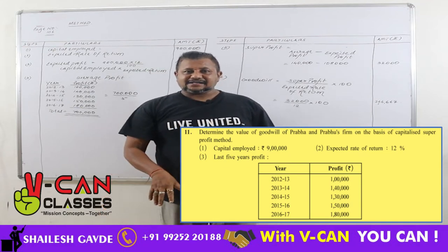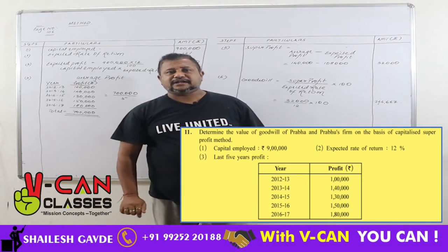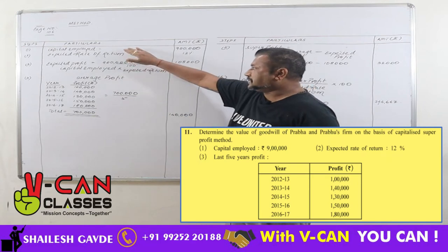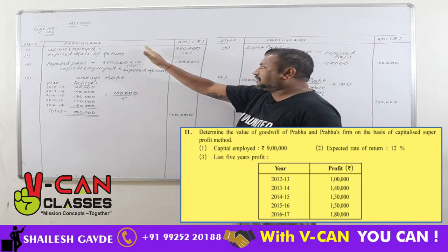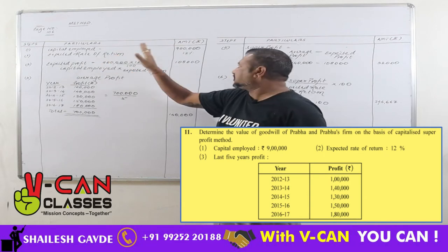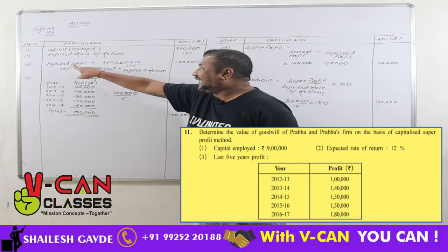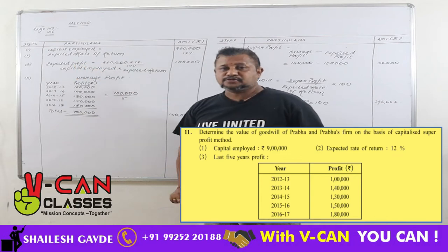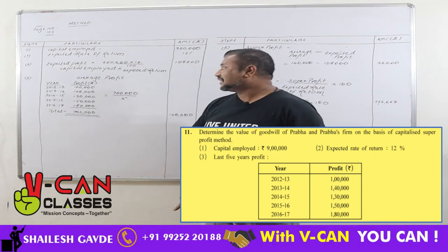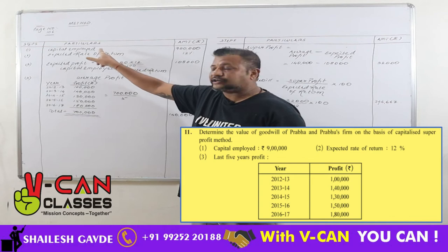Matlab, jab tak super profit calculate karte ho, tab tak saari steps same rahengi. Step 1: capital employed is given — 9 lakhs. Step 2: expected rate of return is also given — 12%.